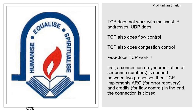How does TCP work? The first step is to establish a connection, since it is connection-oriented. This involves synchronization of sequence numbers — assigning a port number along with a sequence number which is open between two processes. TCP also implements ARQ — automatic repeat request — methods for error recovery, using these techniques to recover errors and control flow.